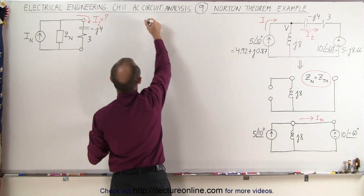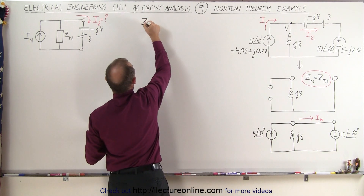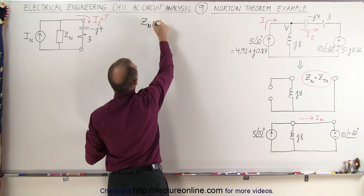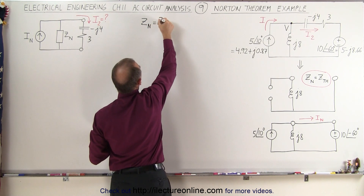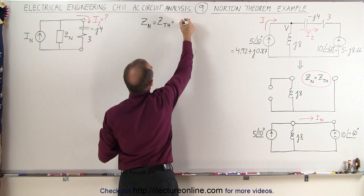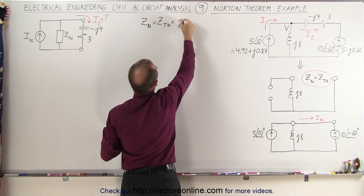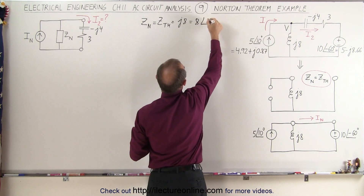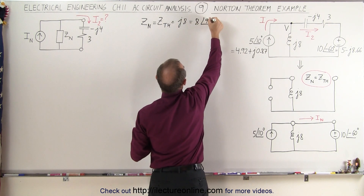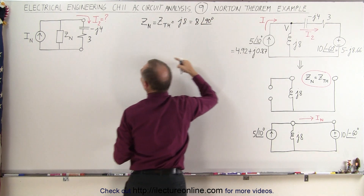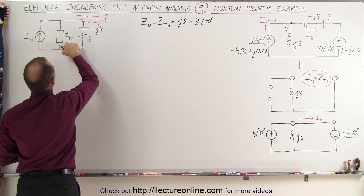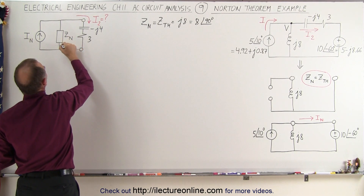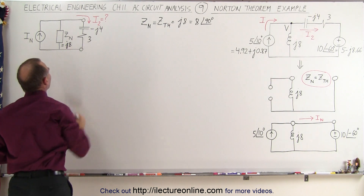So we can write that Z Norton — the Norton impedance — is equal to the Thevenin impedance, which in this case is J8, equal to 8 with a phase angle of 90 degrees. So the source impedance in the Norton equivalent becomes J8.